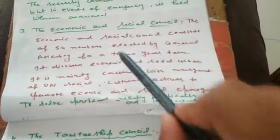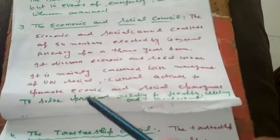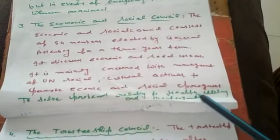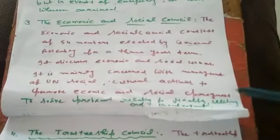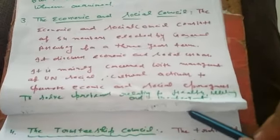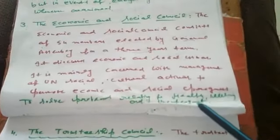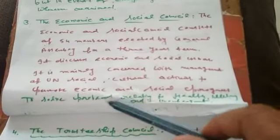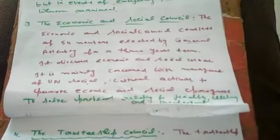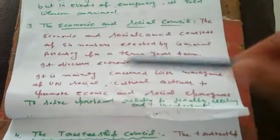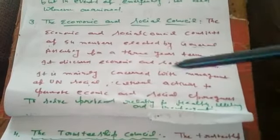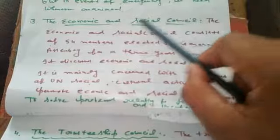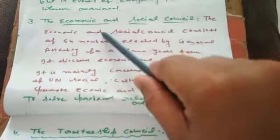That is the most important function of the Economic and Social Council — to solve problems. The problems discussed and solved by this council relate to health, illiteracy (niraksharta), and unemployment. These are the main problems of the whole world which are addressed by this third organ of the UN. There are 54 member countries in the Economic and Social Council.